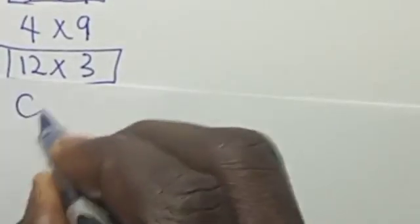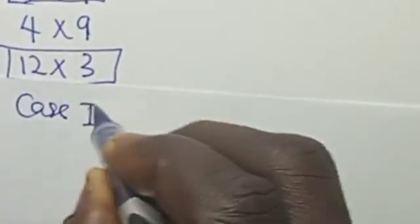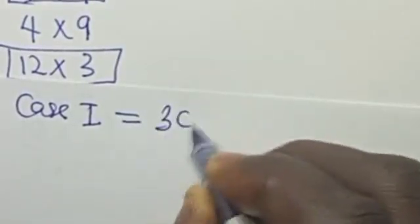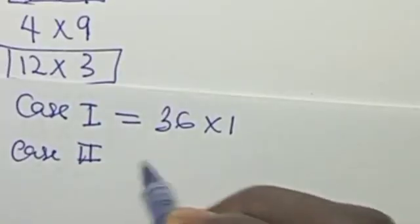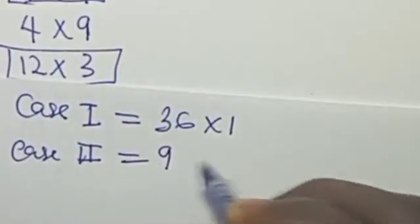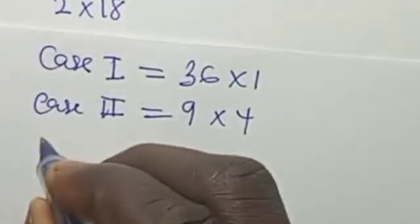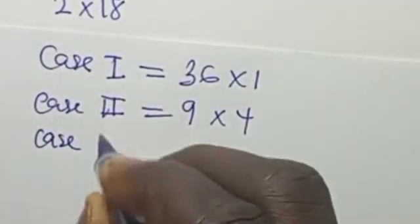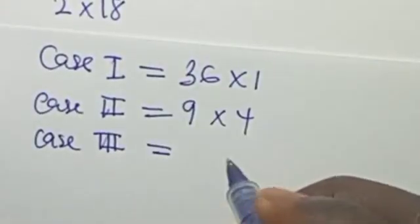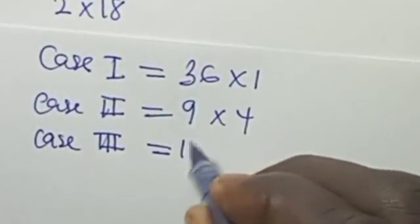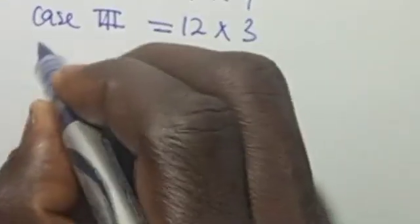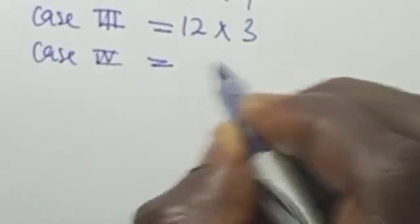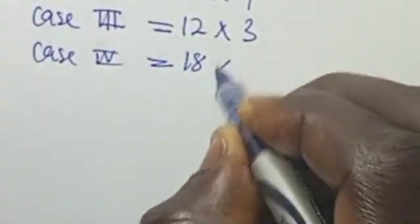So to do this, we write the cases out. Case 1: 36×1. Case 2: 9×4. Case 3: 12×3. Case 4: 18×2.